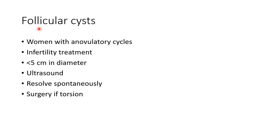Follicular ovarian cysts are seen in women with anovulatory cycles. They are also seen in women undergoing infertility treatment. Follicular ovarian cysts are usually less than 5 cm in diameter. They can be diagnosed by ultrasound, they usually resolve spontaneously, and they require surgery if they undergo torsion.